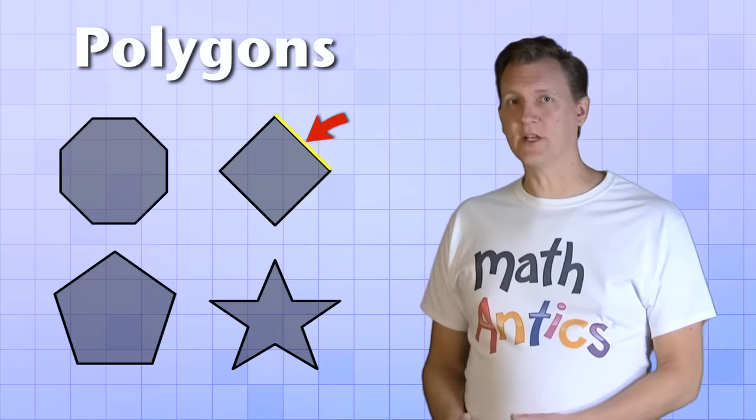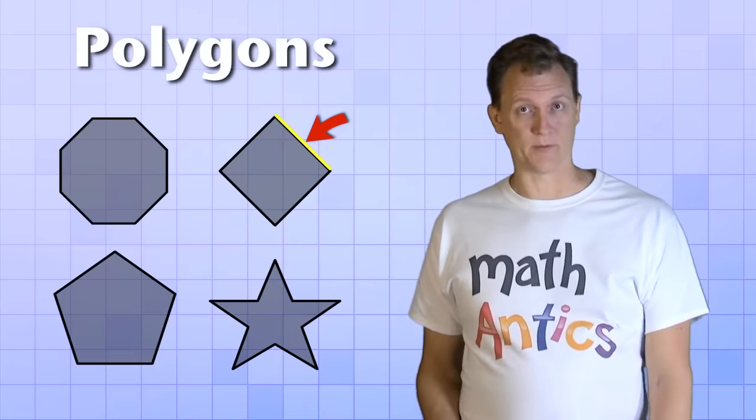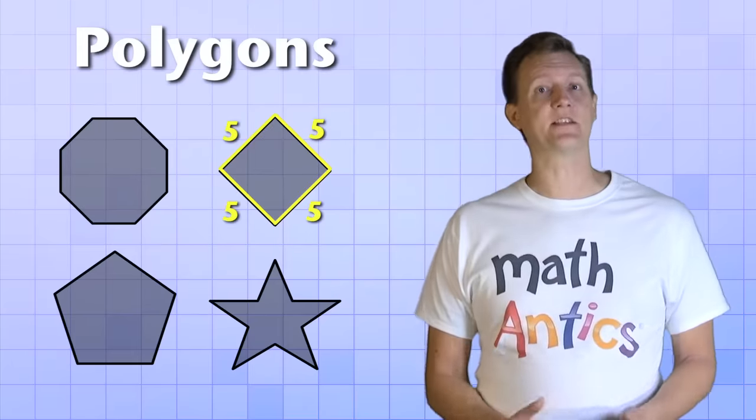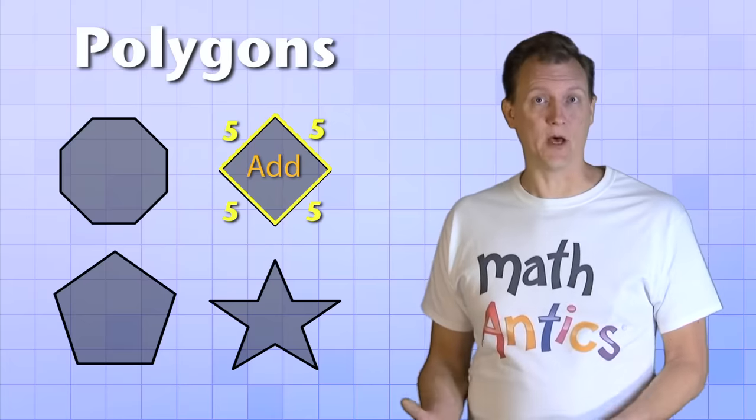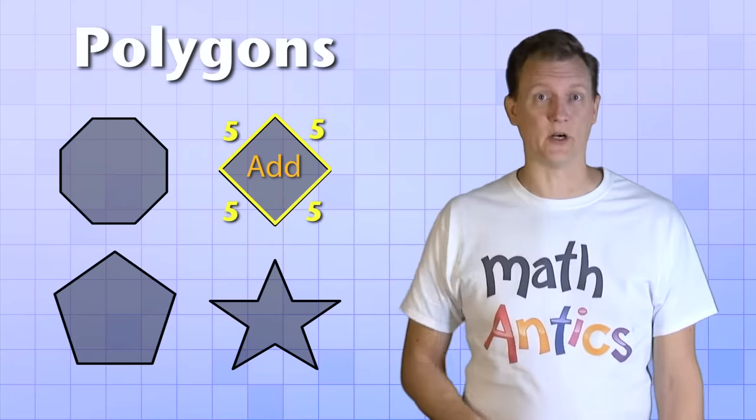Since polygons are made from only straight sides, it's easy to find their perimeter. If you know the length of each side, all you have to do is add them up, and the total length you end up with is the perimeter of the polygon. Let's try doing that with a few examples so you see how it works.